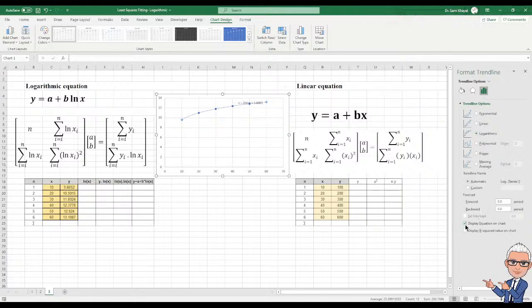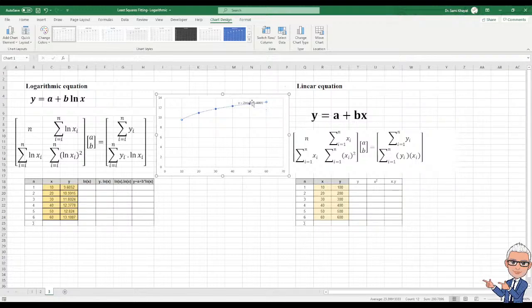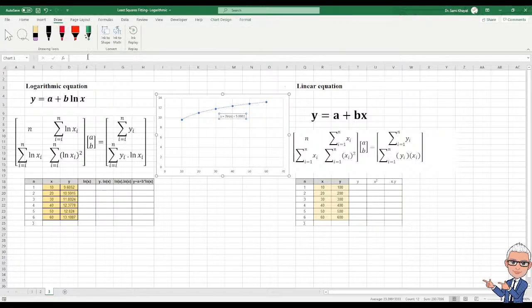We can display the equation. Now you can see, Excel solved it for you. But how do we solve it? We will talk about this. We will do it manually. We will get the same answer. This one is something like y equals 5 plus 2 ln x.